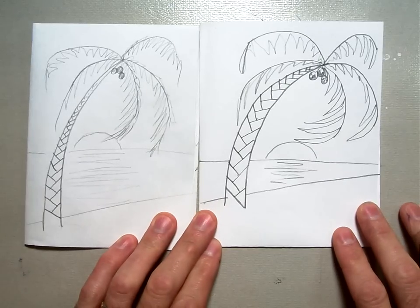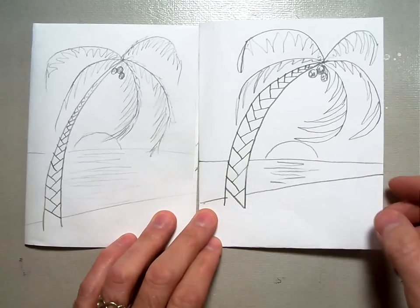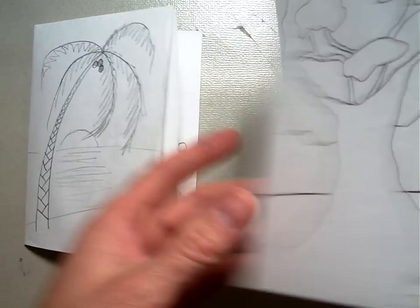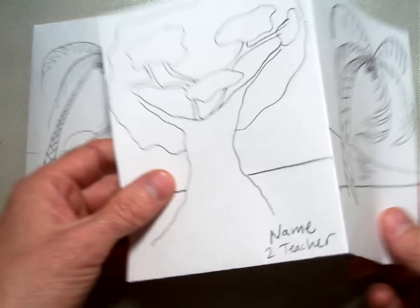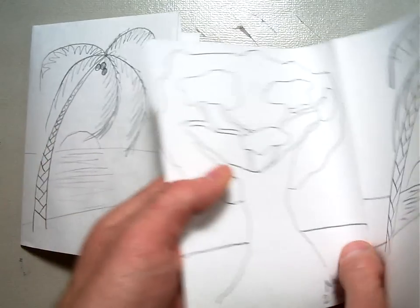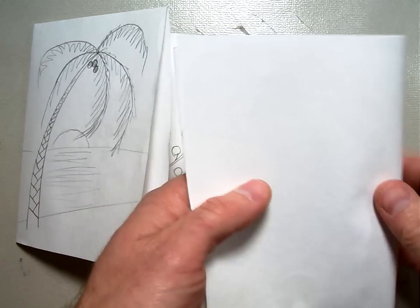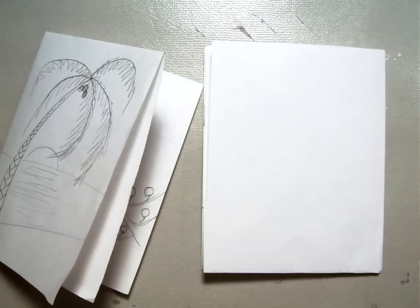In our last video we learned how to draw the palm tree for our Henry Rousseau picture, and now you have two trees drawn onto your picture. So open them up, flip it over backwards so that those two trees are touching and you'll have an empty space to draw your next tree.